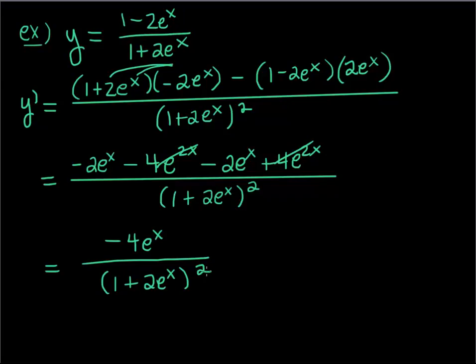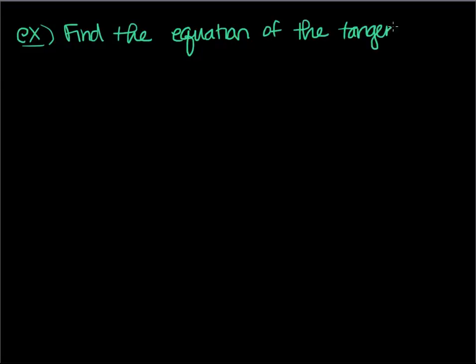I hope that stuff makes sense. Let me do one more example and then I'll call it good. I told you this was going to be short and sweet. Let's find the equation of the tangent line to the function y = 4e^x - x at x = 0.